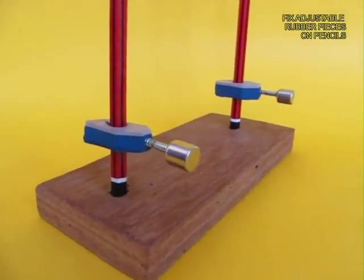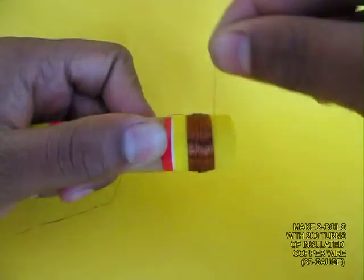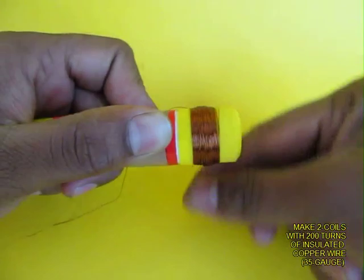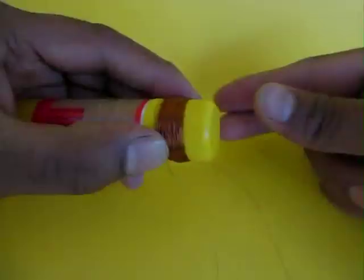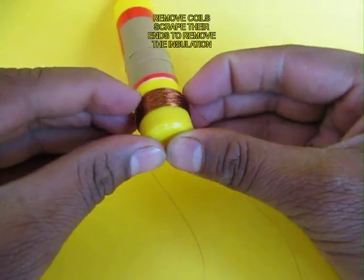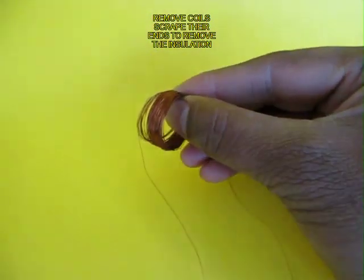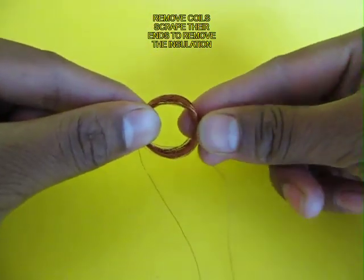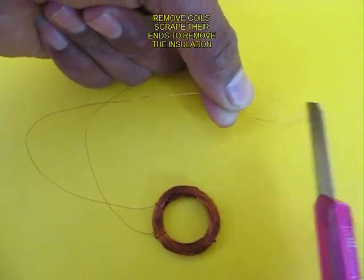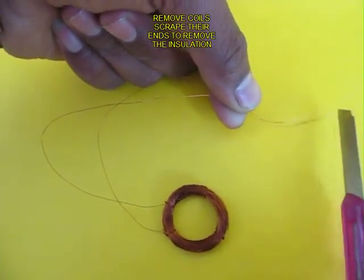And now on a glue stick wind 200 turns of insulated copper wire 35 gauge and after winding remove the coil, anchor it and then scrape the ends of the insulation so that you see bare copper.